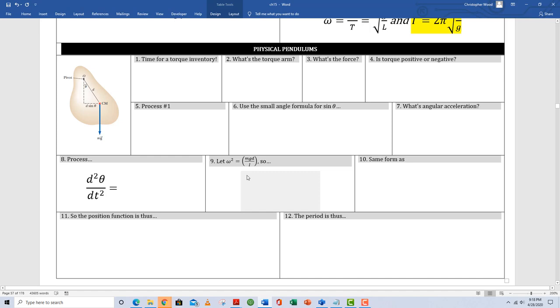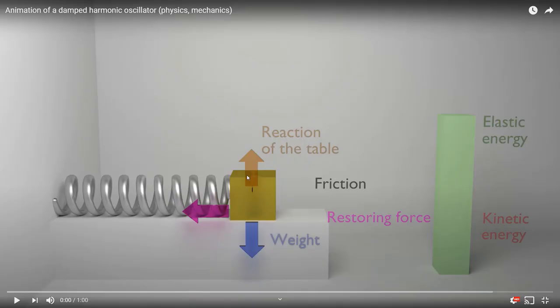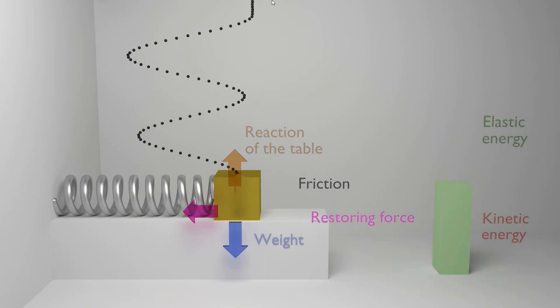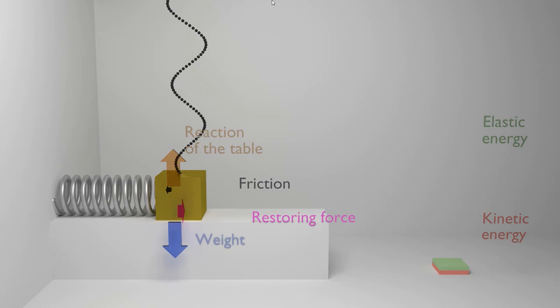We'll sidestep physical pendulums for now. This next section is damped simple harmonic motion — we're no longer ignoring losses. Losses could come from friction, air resistance, or drag; collectively we call these a damping force. We use an expression for damping force that is linearly related to velocity, always fighting velocity. The greater the velocity, the greater the damping force. You can see that the friction force steals energy — the sinusoidal graph starts to decay, the amplitude gets smaller, and the elastic potential and kinetic energies deplete.